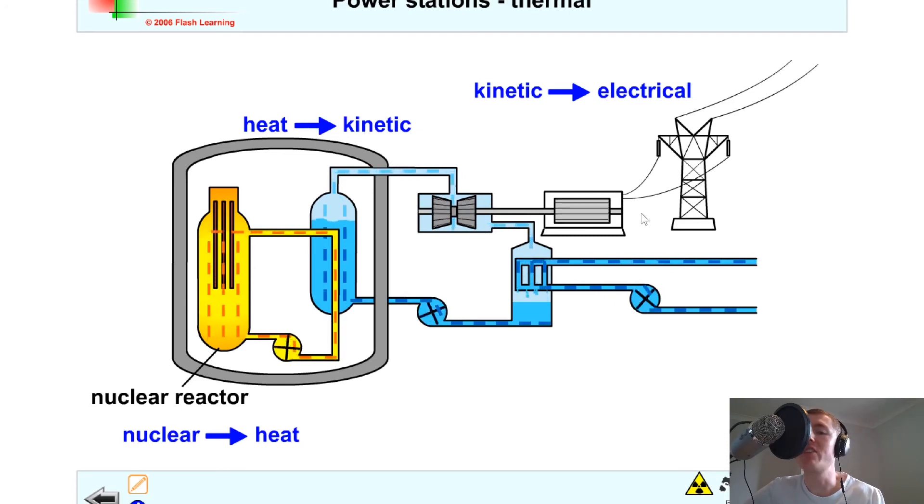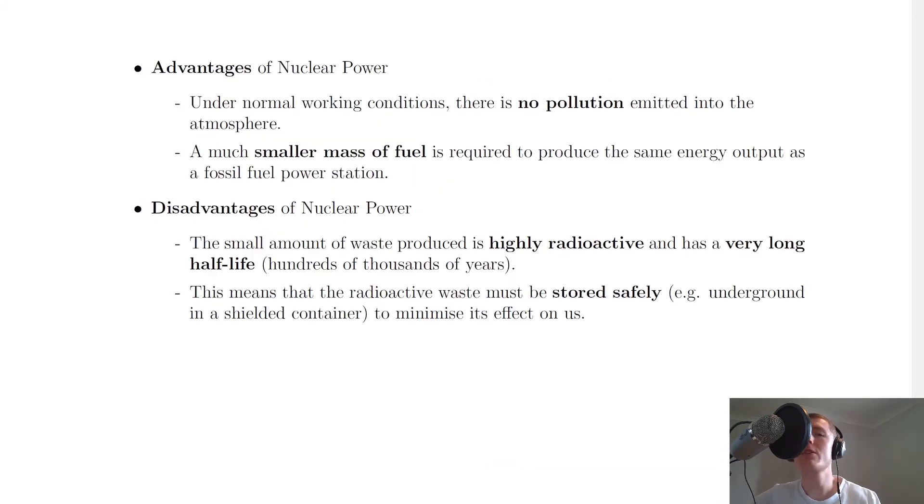Nuclear fission reactors will also have a condenser where some of the water in this process condenses and can then be recycled and reused. Lastly, we're just going to look at some advantages and disadvantages of using nuclear power.